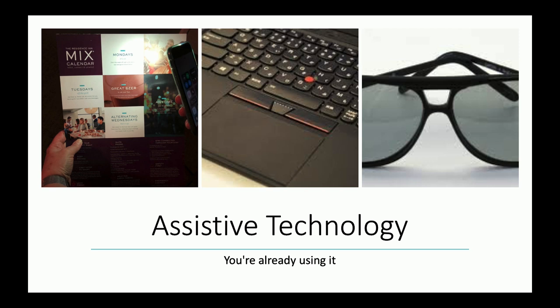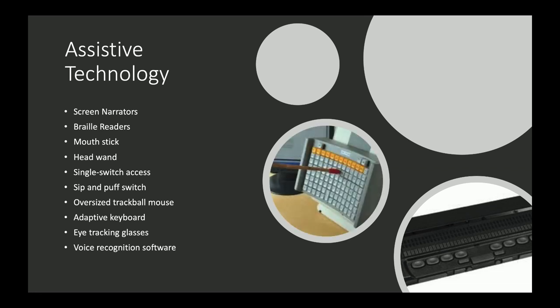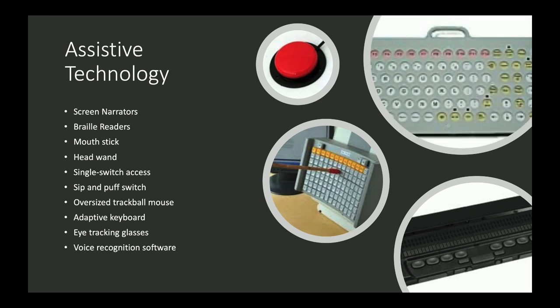Did you use an escalator today? That's technically assistive technology — it's not always high-tech. The ones we tend to think of for accessibility include screen readers, braille readers, sip-and-puff switches, single-access switches, eye tracking, and adaptive keyboards. These people may be struggling to use your software and end up abandoning popular sites out of frustration.